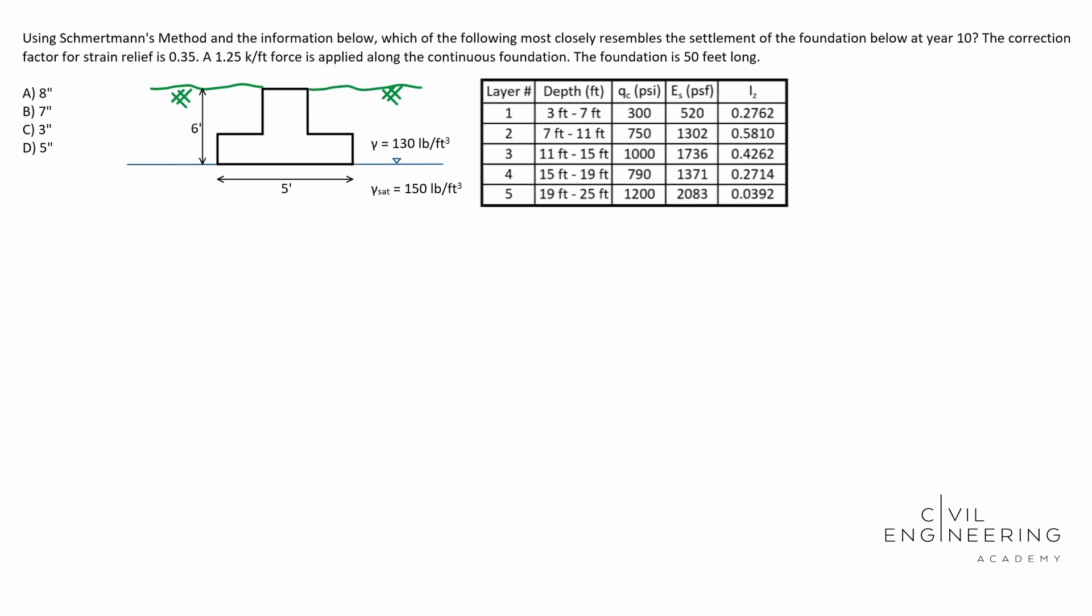Today we have a settlement problem and in particular we're going to be talking about Schmertmann's method. Here's what the question says. Using Schmertmann's method and the information below, which of the following most closely resembles the settlement of the foundation below at year 10? The correction factor for strain relief is 0.35, a 1.25 kips per foot force is applied along the continuous foundation. The foundation is 50 foot long. Then we see our diagram there. We see our table that we're given. Then we see our four options there available to us in inches. So that's going to be our settlement in inches.